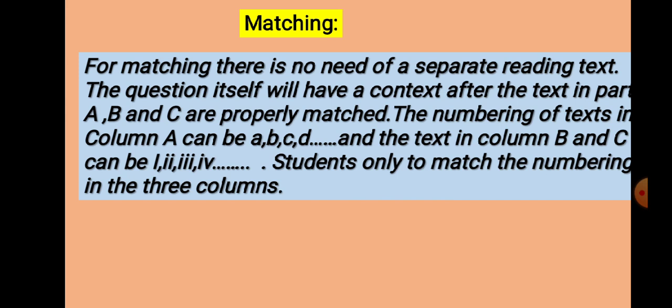Matching. For matching, there is no need of a separate reading text. The question itself will have a context. After the text in part A, B, and C are properly matched. The numbering of text in column A can be A, B, C, D, and the text in column B and C can be 1, 2, 3, 4. Students only need to match the numbering in three columns and then write the sentences on the answer script.